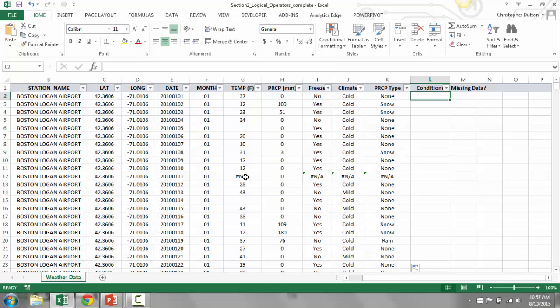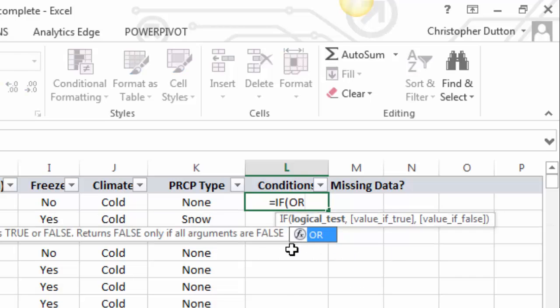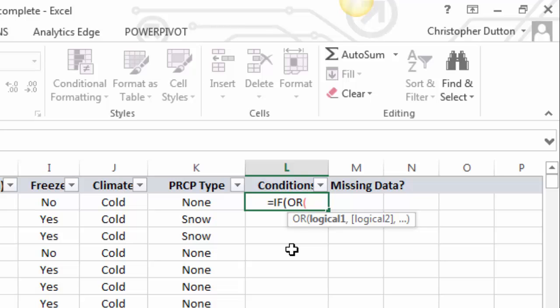Now let's quickly do the conditions field. This is the OR statement, and again, the conditions that must be true are that either the precipitation type is snow or the precipitation type is rain, in which case I'm going to call conditions wet, otherwise dry. So, equals if OR, two conditions are K2 equals snow, remember in quotes because I'm dealing with a text string, comma to my second criteria, which is K2 equals rain.